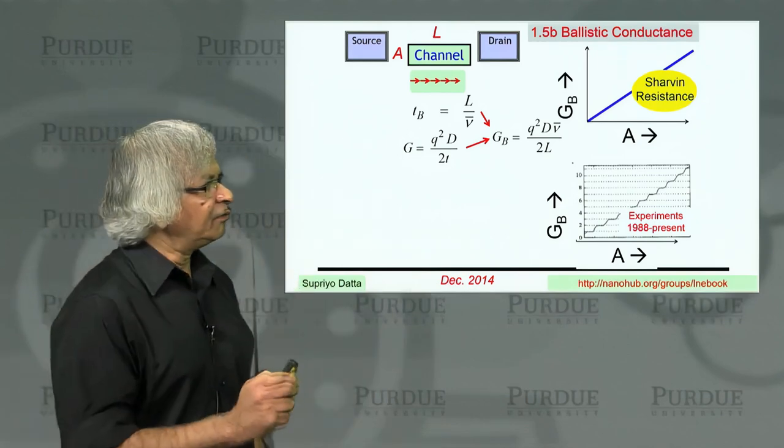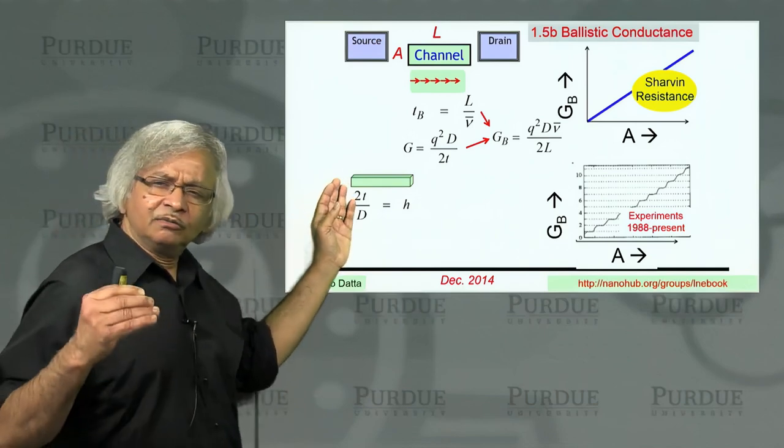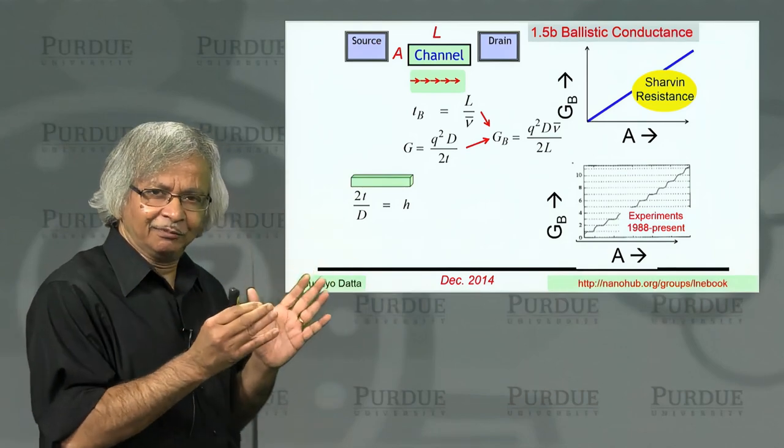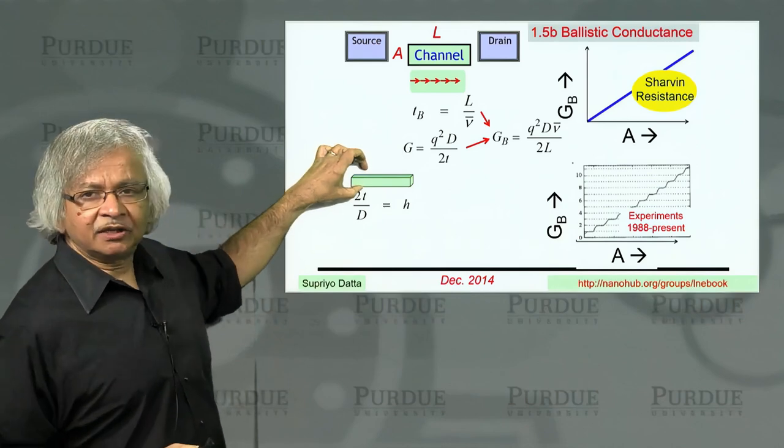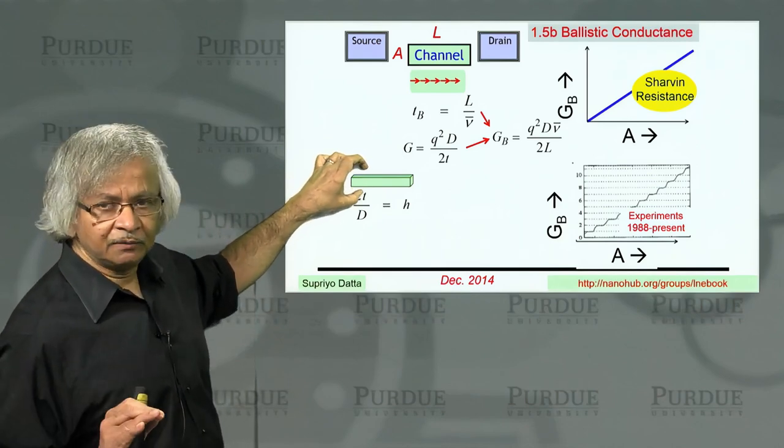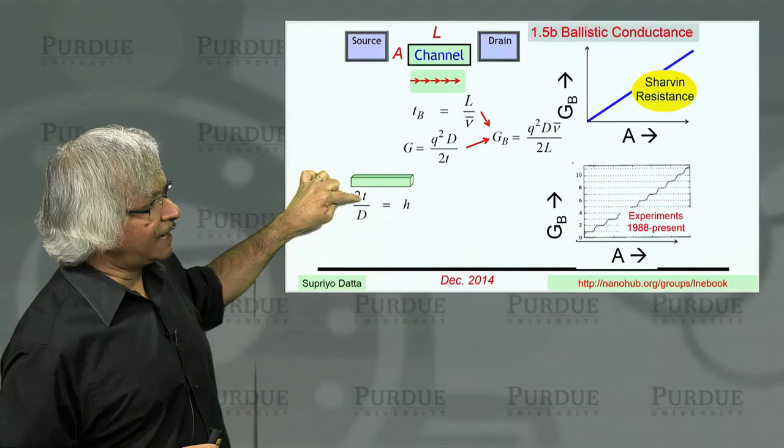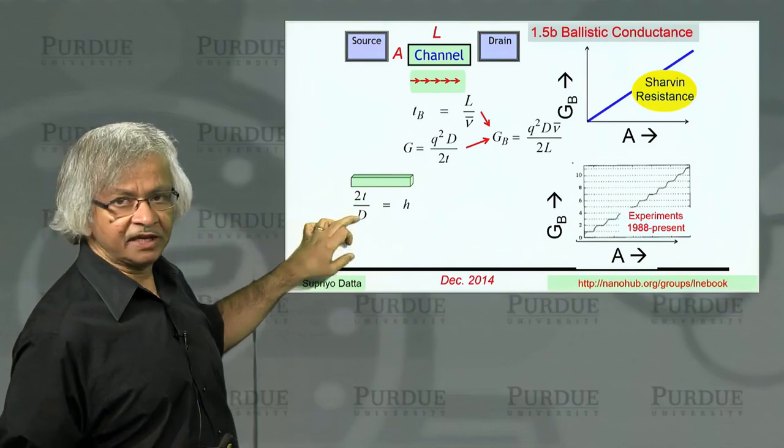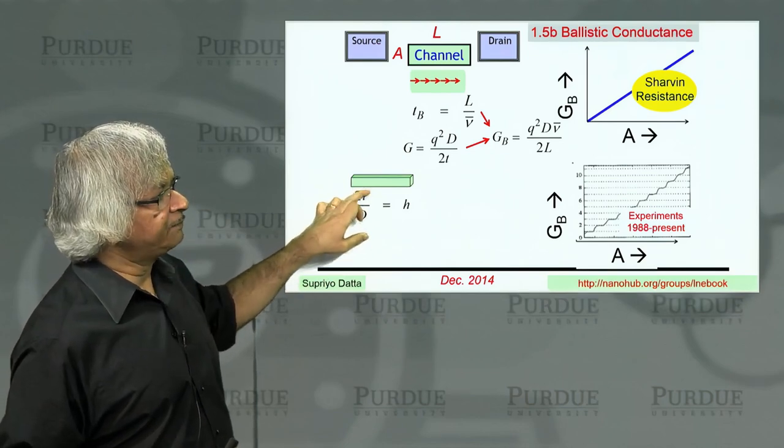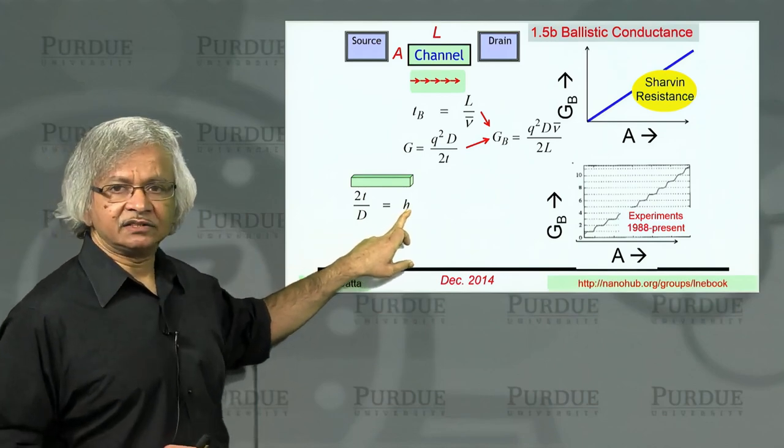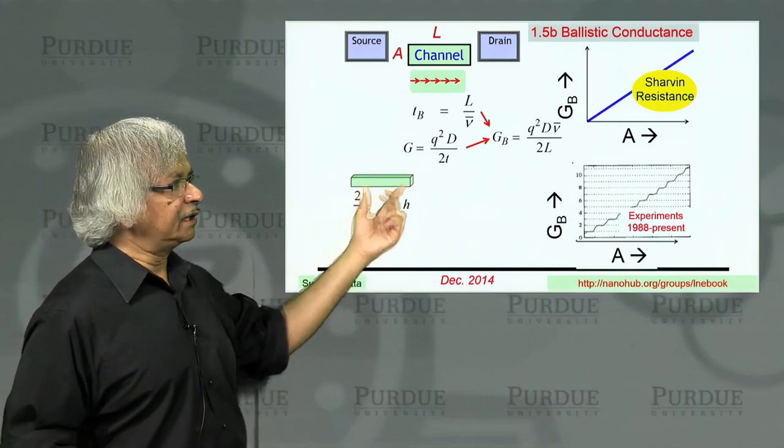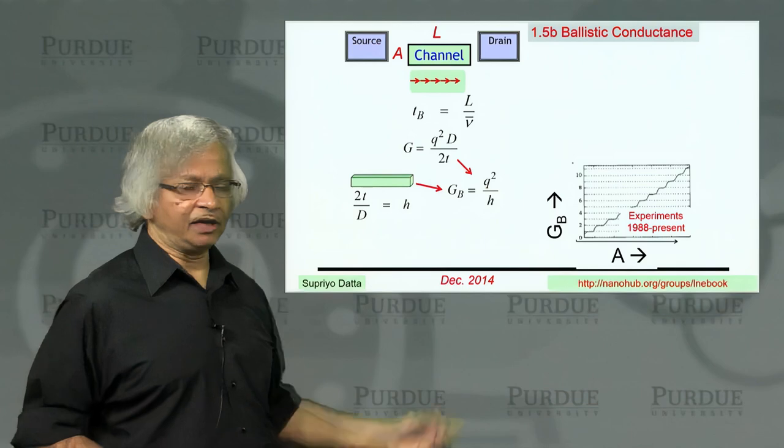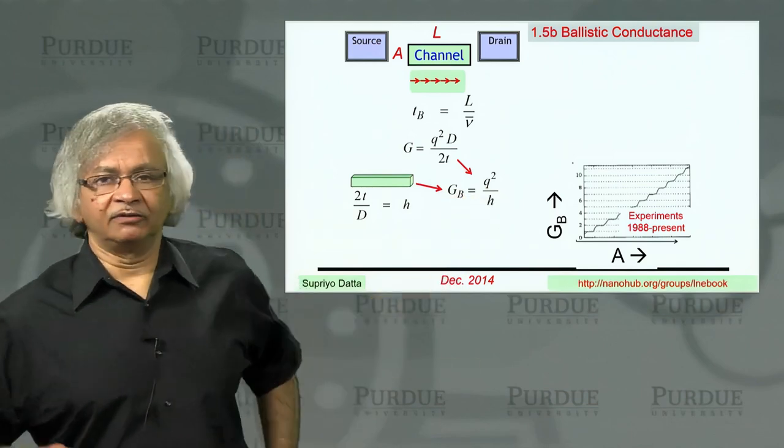Now, how do you understand that? Well, this is something we'll talk about more in the next unit, but let me get ahead of myself for a minute. If you take a one-dimensional wire, what you can show is that the time it takes for an electron to get from left to right, this t, and this D is the density of states, this quantity 2t over D is equal to Planck's constant, h. And if you take that number and put it into this expression for conductance, you'd get the ballistic conductance as q squared over h. And this is what is known as the quantum of conductance.